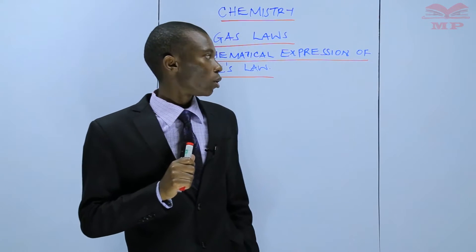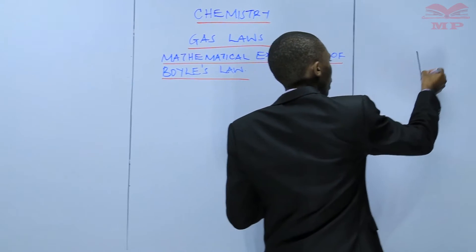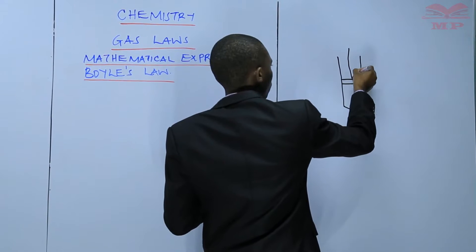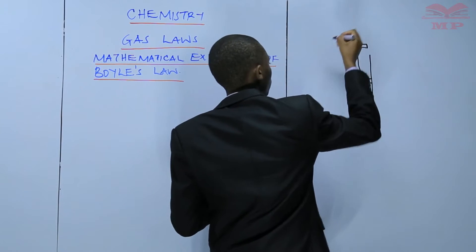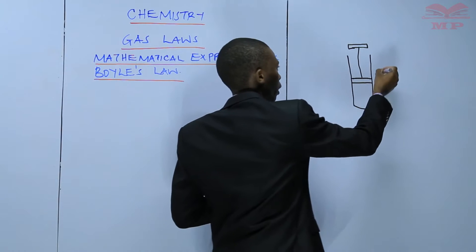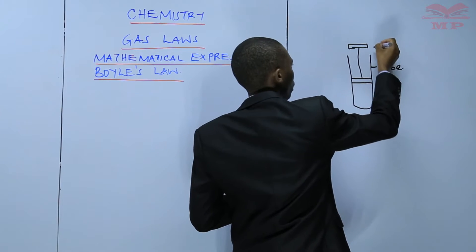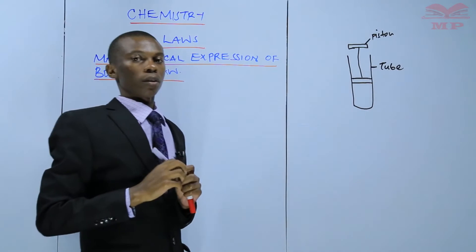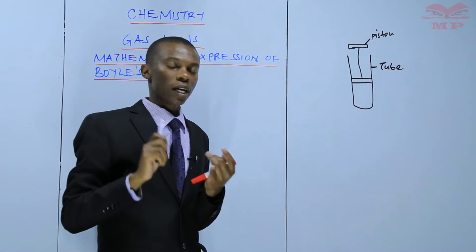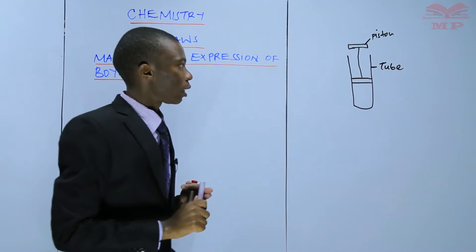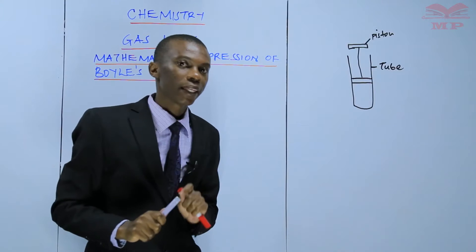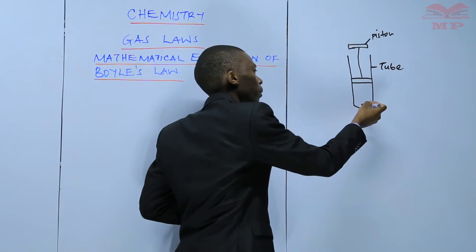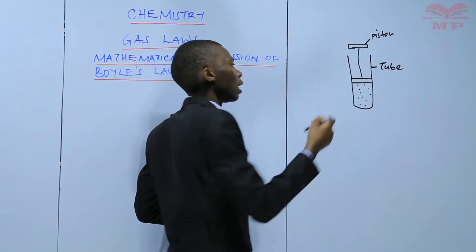The example we gave was using a piston — using this illustration. This is just a tube and this is the piston. If you remember from Form 1, we said there are three states of matter: solid, liquid, and gas. Matter is anything which has mass and occupies space, so this space has matter and we have particles of air inside.